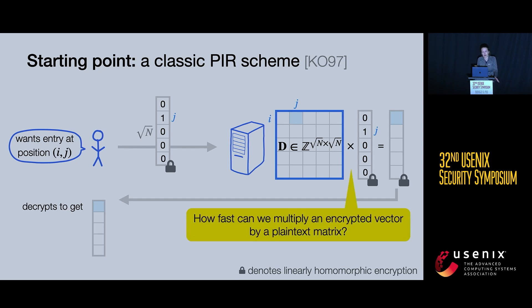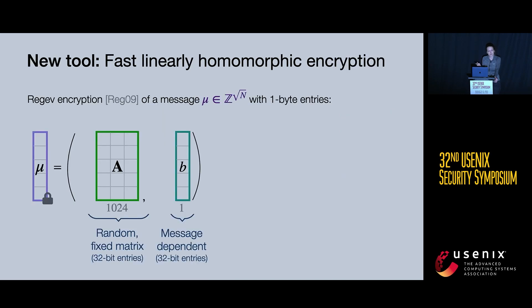This is great, but an important question is: how fast can we actually do this? How fast can we multiply an encrypted vector by a plaintext matrix? In this work, we give a new tool for the job.